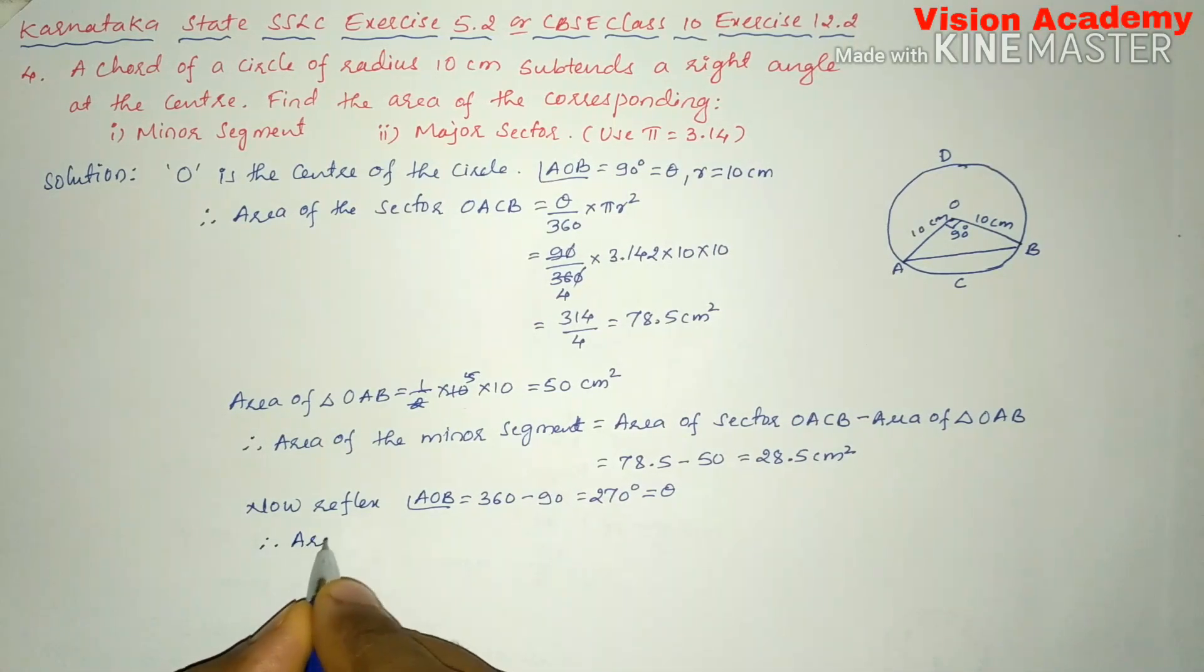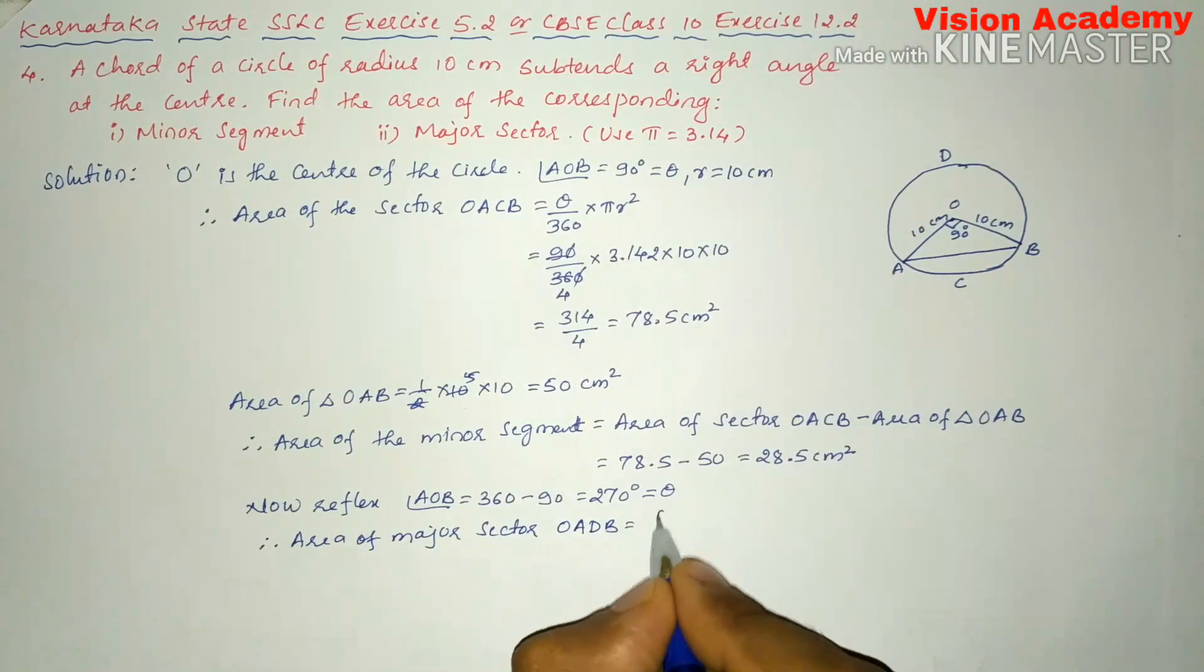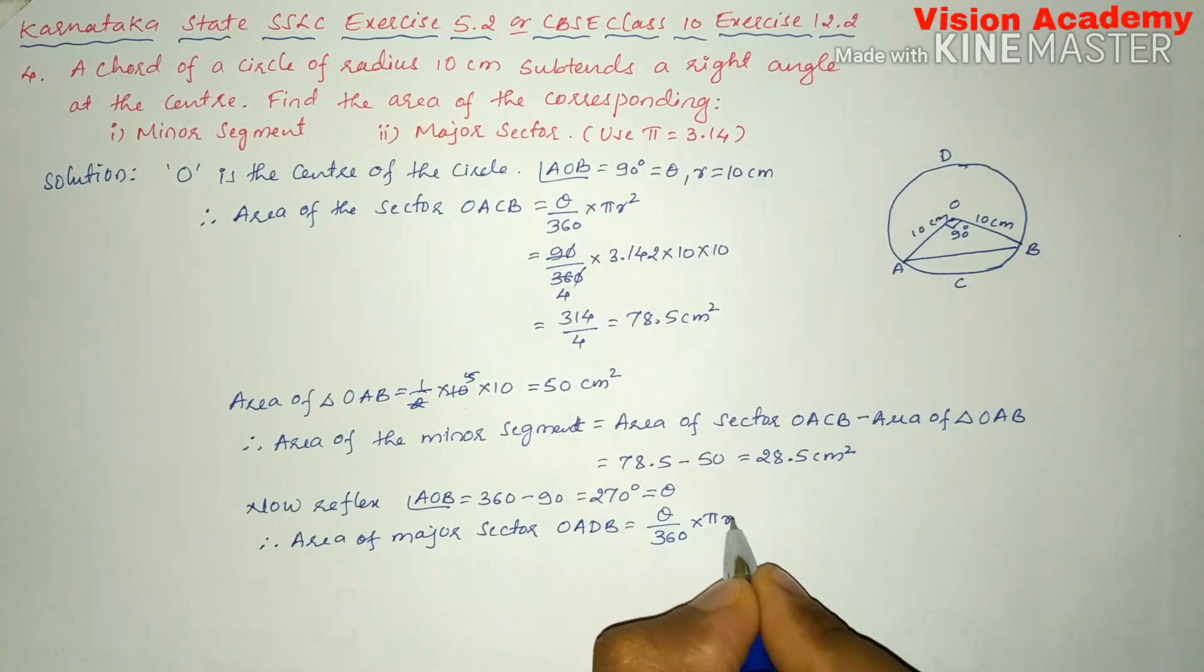Therefore, area of major sector OADB is equal to theta divided by 360 into pi r square. Here theta is 270 divided by 360 into 3.14 into r is 10 into 10.